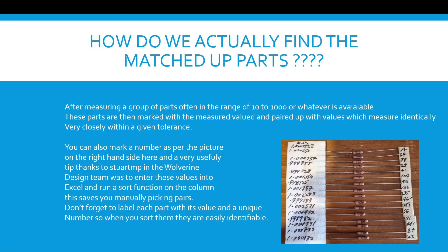Once you've taken measurements from a group of parts — often in the range of 10 to 1000 — mark each part with its measured value and pair up those with identical or very closely matching values within a given tolerance. You can also mark each one with a unique number, from 1 to 10 or whatever it is. A very useful tip from Stuart MP on the Wolverine design team: enter the values into Microsoft Excel and run a sort function on the column — this saves you manually picking pairs. Don't forget to label each part with its value and a unique number so when you sort them they're easily identifiable.